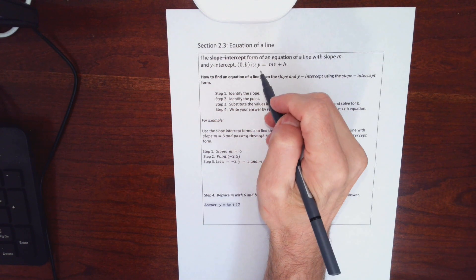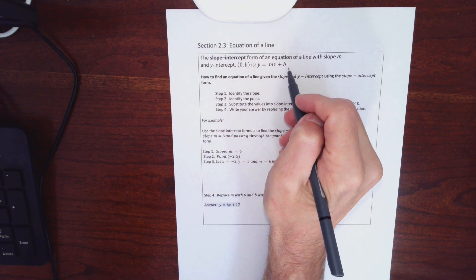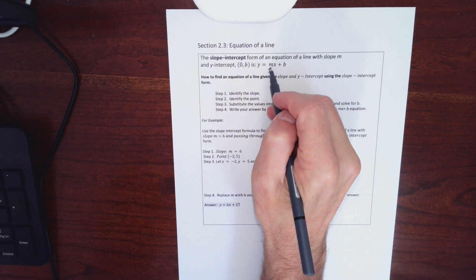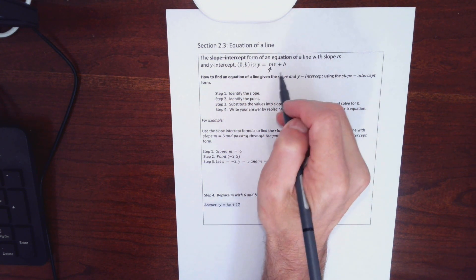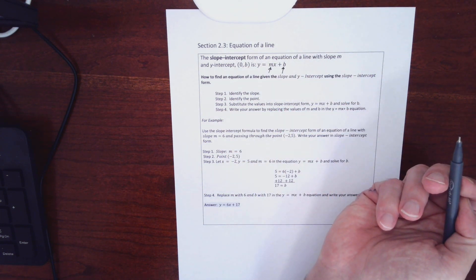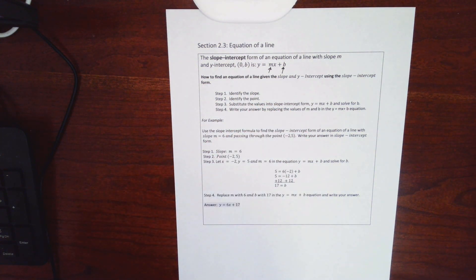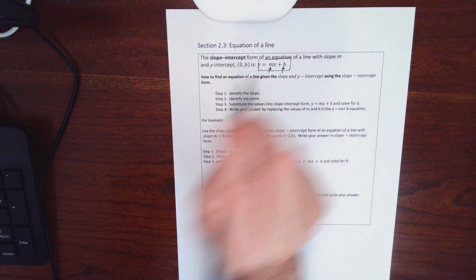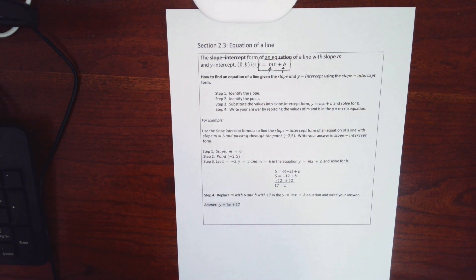There's one equation for a line we've been exposed to so far: y equals mx plus b, the slope-intercept form. When a line is written in slope-intercept form, the number in front of the x is the slope, and the number after the plus or minus sign is the y-coordinate of the y-intercept. If I give you some information about a line and ask you to find an equation, I can use this strategy.